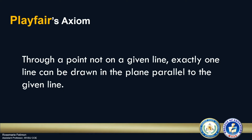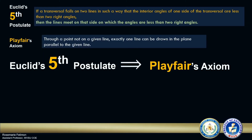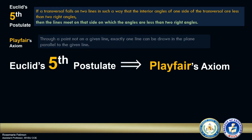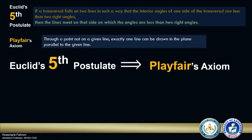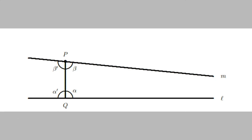To show the equivalence, we need to show that Euclid's 5th postulate implies Playfair's Axiom, and Playfair's Axiom implies Euclid's 5th postulate. Let's begin the first part of the proof: prove Playfair's Axiom using Euclid's 5th postulate as our premise. We will use this illustration in the proof. We have a line PQ intersecting line M and line L at two different points, hence forming angles beta, alpha, alpha prime, and beta prime.